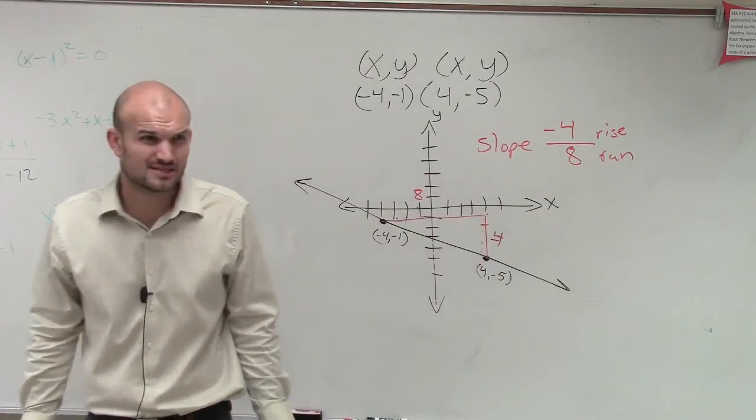Okay, that's where we get the rise over the run. Rise tells you how far you're going up and down. Run's telling you how far you're going left and right. Does that kind of make a little sense? Yeah.